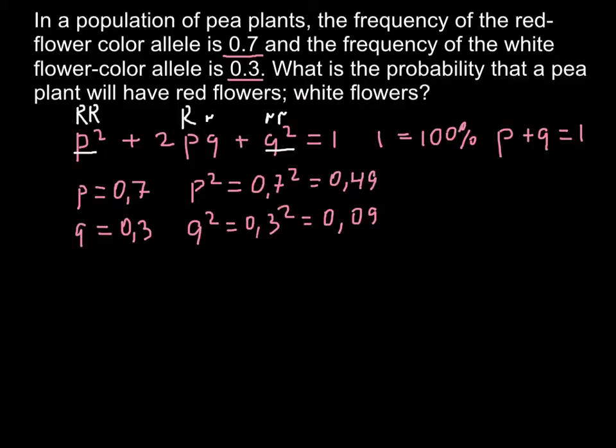So we already have these alleles frequencies. And this is going to be 0.49 here and 0.09 here. And now we have to solve for this middle part of the formula.